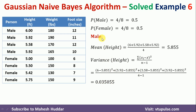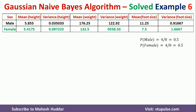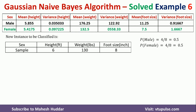These two values — the mean and variance — are for male given the feature height. The same process has to be applied to calculate the mean and variance of weight, and mean and variance of foot size for male. The same process also has to be applied for female. Once you calculate all the mean and variance for all attributes, you will get a table with mean and variance of height, weight, and foot size for both male and female. The new instance to be classified has height = 6, weight = 130, and foot size = 8.